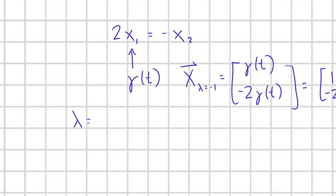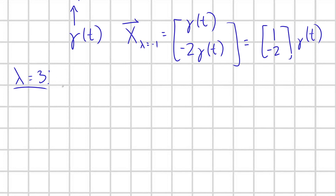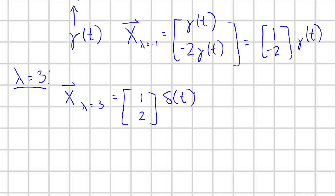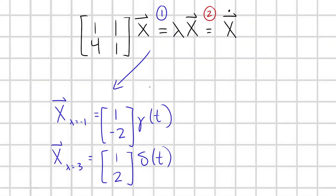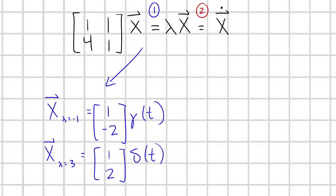Next, we find the eigenvector associated with λ = 3. The process is exactly the same, and we find that the eigenvector associated with λ = 3 is (1, 2) times some function of t — I'll call it δ(t) to distinguish it from γ. To summarize: by following the blue route, I found two unique eigenvectors with these component relations. We still have the unknown functions γ(t) and δ(t). Once we have those, we have our basis vectors and can build any solution x as a linear combination of these eigenvectors.